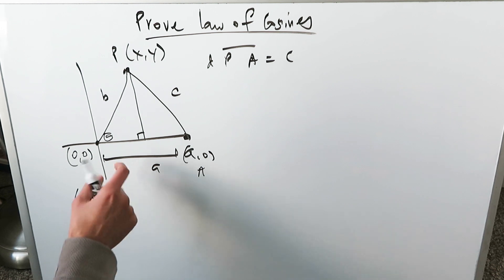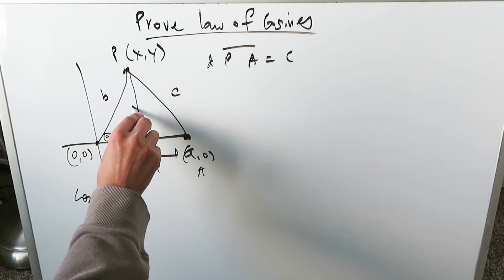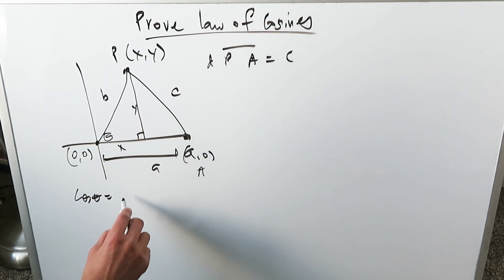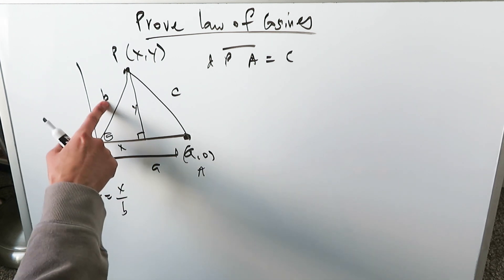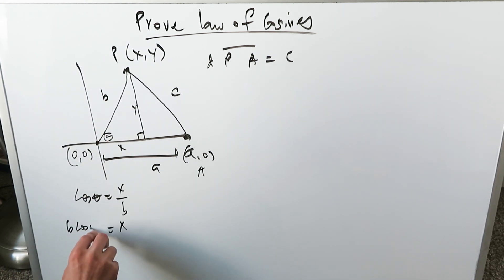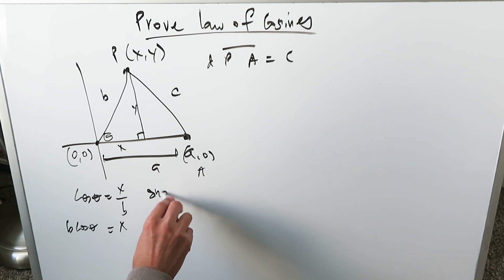Look, cosine theta is equal to, this is x dimension, this is y dimension. Cosine theta is equal to x over b. Hypotenuse, x is equal to b cosine theta. Likewise, you can do sine theta is equal to y over b and y is equal to b sine theta.